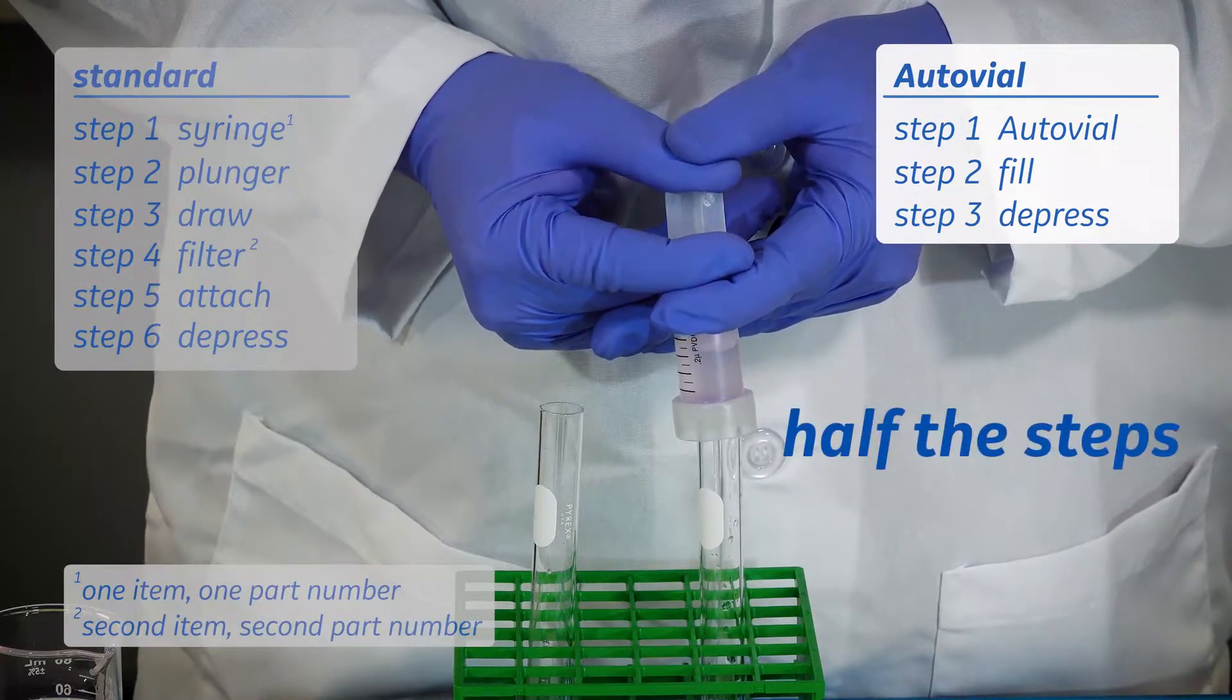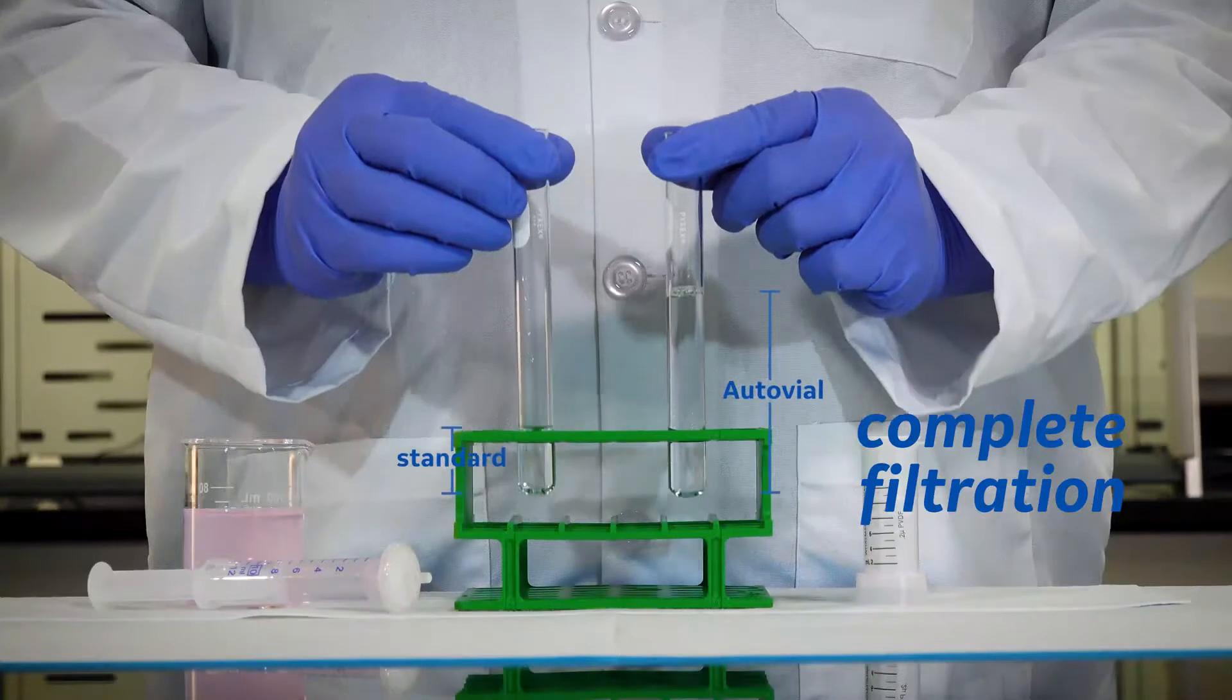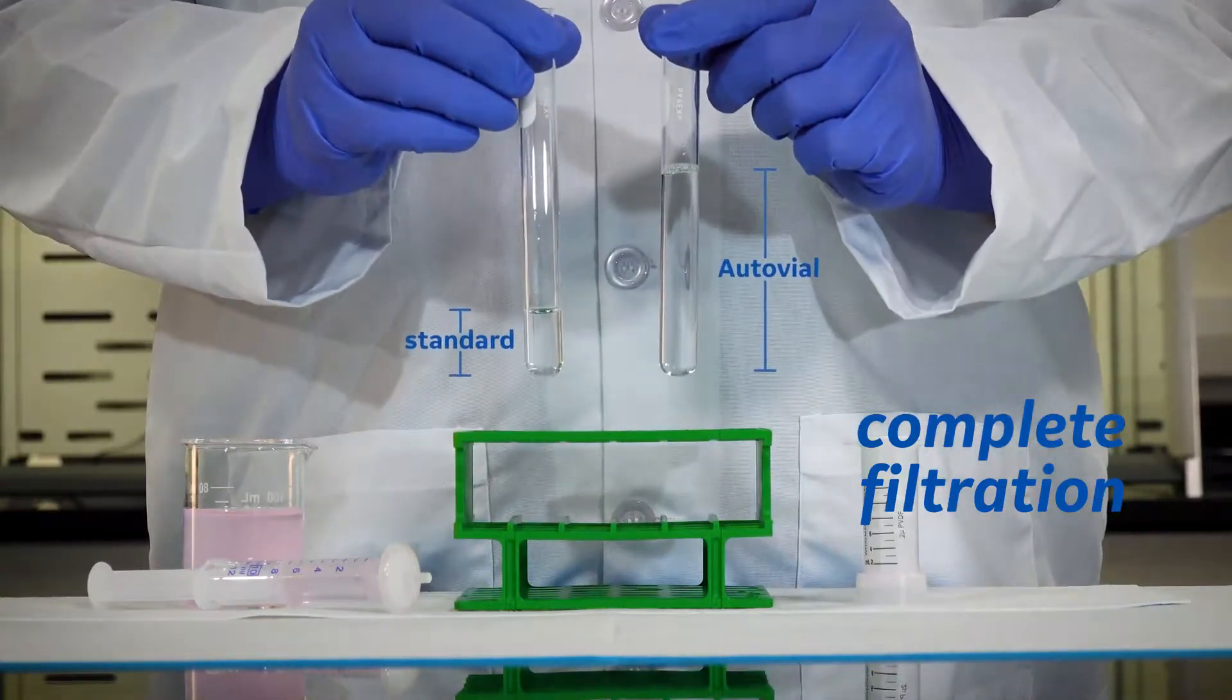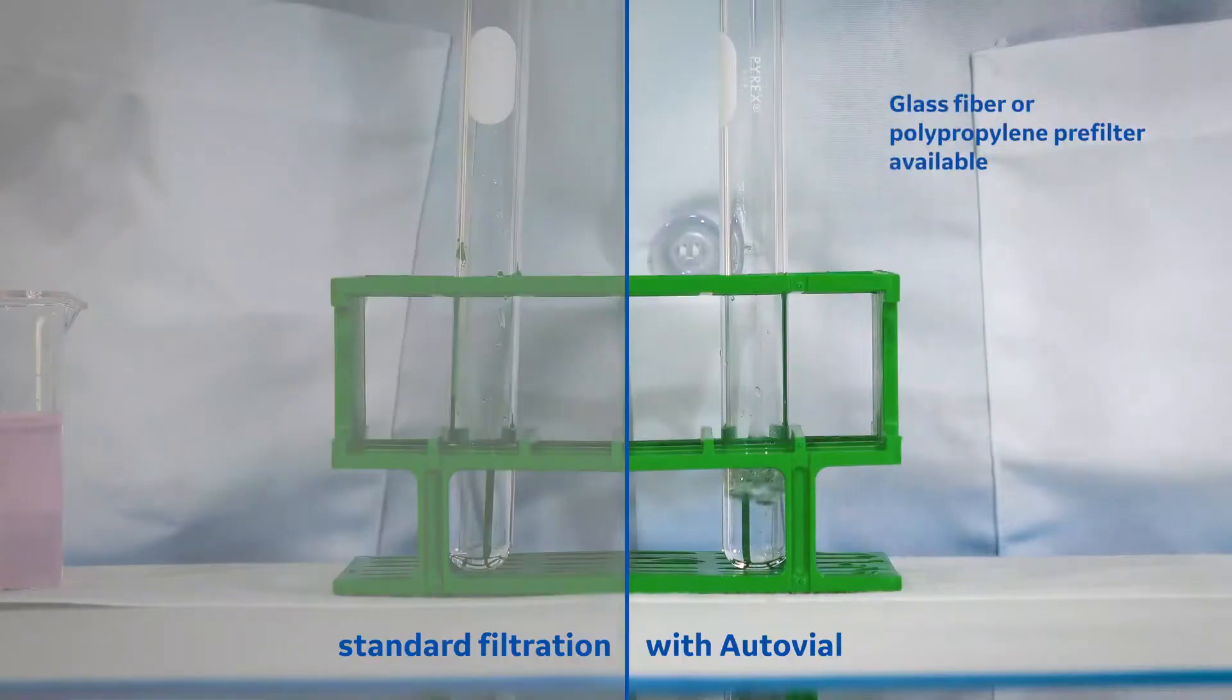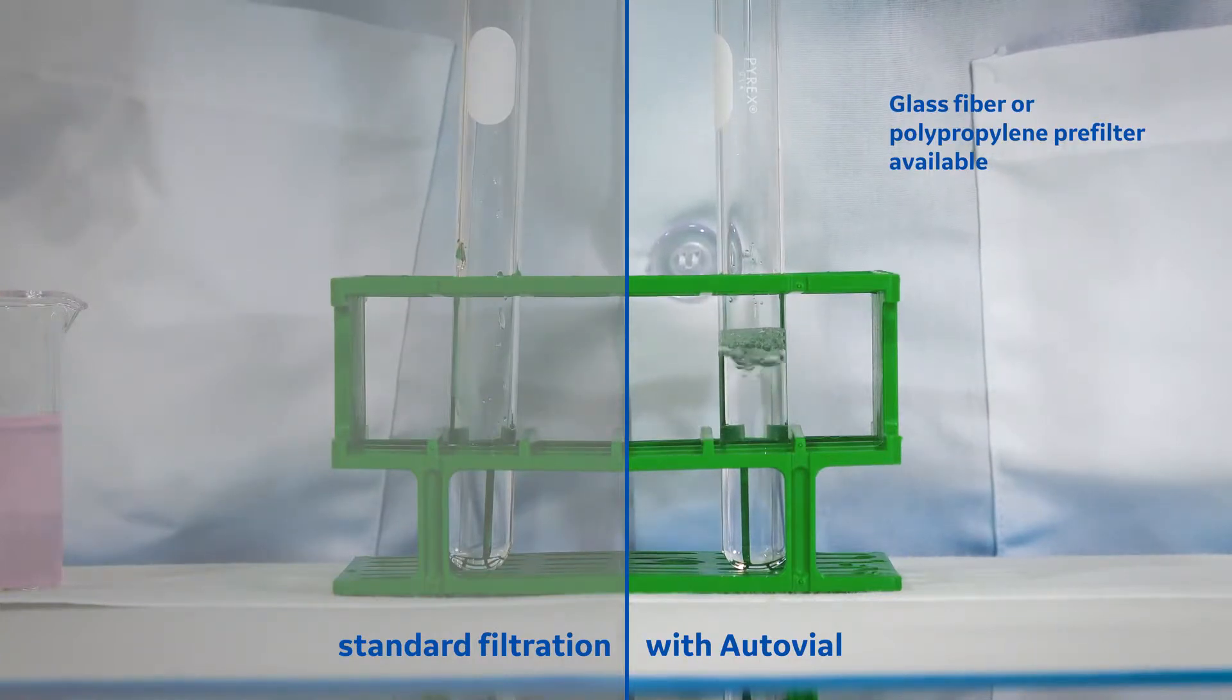Half the steps, a single unit. And did you notice that all the sample was easily filtered through the autovial? This can be achieved using the built-in glass fiber or polypropylene pre-filter available in selected models.